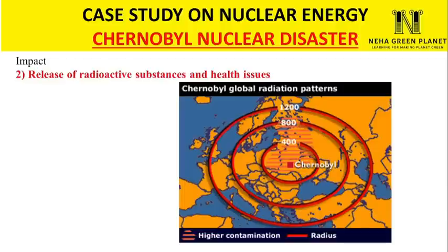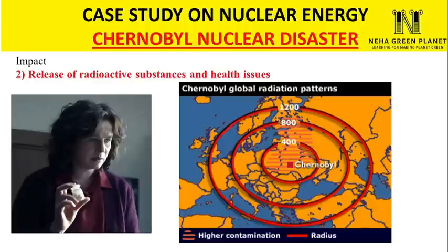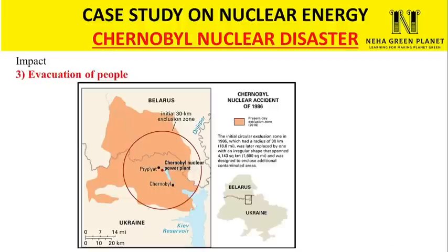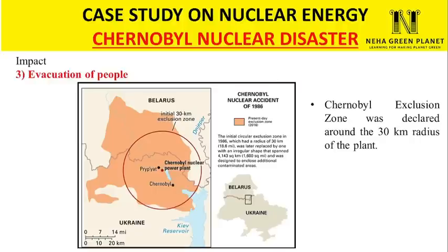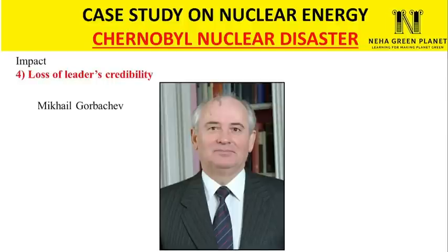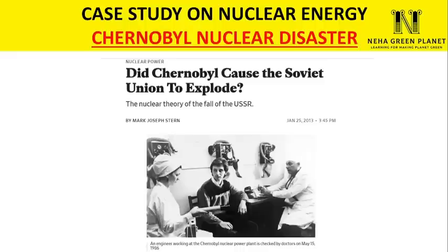Poland's government promptly distributed iodine pills to residents to prevent absorption of radioactive iodine-131. In Ukraine, evacuation was carried out only after two weeks, and a 30 km Chernobyl exclusion zone was declared around the power plant — an area so badly contaminated that no humans are allowed to live there even today. Mikhail Gorbachev's government failed to adequately inform residents about the nuclear leak and delayed evacuation, causing people to lose faith in the government. Along with other political reasons, the Chernobyl tragedy contributed to the dissolution of the Soviet Union.